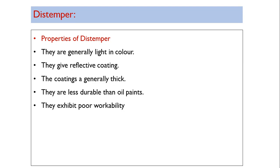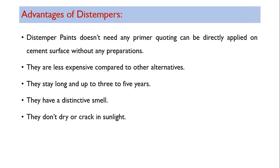Properties of distemper: they are generally light in color, they give a reflective coating, and the coating is generally thick. They are less durable than oil paint, because oil paint has oil as its base and thus has a longer life. Distempers also exhibit poor workability.